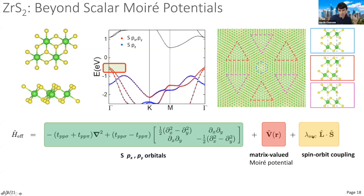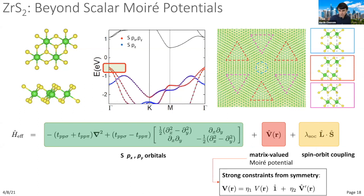This matrix-valued moiré potential is important. Using the same considerations as for MoS2, at the very top of the valence band, even though the heterostructure is chiral, the highest bands will be almost C6-symmetric with mirror symmetry, posing strong constraints on the form of the moiré potential. In fact, one can show that this moiré potential has only two free parameters: a scalar potential, just as before, plus a matrix-valued potential term that admixes the px and py orbitals.